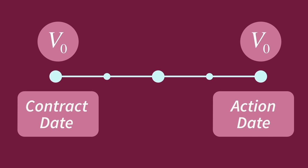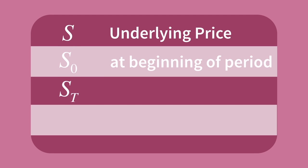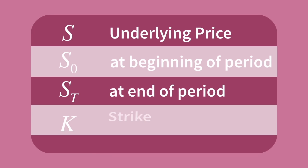We're just looking at the outcome of a strategy on the expiration date of an option. Before we tackle the LOS, let's quickly remind ourselves of some of the notation used in this options material. S is the underlying price — S0 being the price at the start of the period and ST being the price at the end of the period. K denotes the option's strike price.